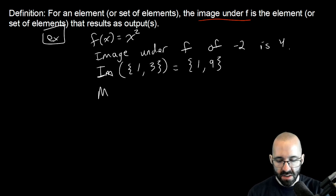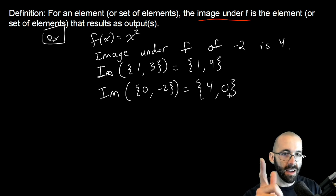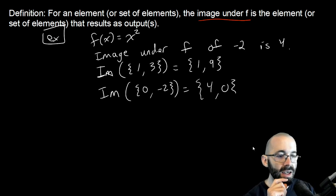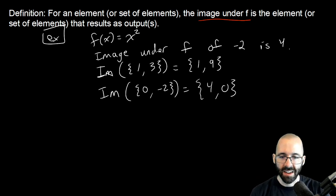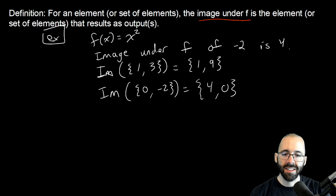So question, is this true or false: is the image of {0, -2} equal to {4, 0}? Think about this, pause the video and think about this. What do you think? Your first guess might be no because they're not in order.